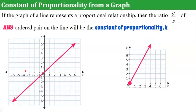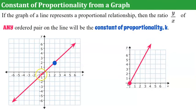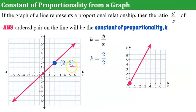We can also identify the constant of proportionality from a graph. If the graph of a line represents a proportional relationship, then the ratio y to x of any ordered pair on the line will be the constant of proportionality k. Looking at the first graph — it passes through the origin, so we know there's a proportional relationship. I'll identify the point (2, 2). The ratio y over x is 2 over 2, which equals 1. So the constant of proportionality of this line is 1.